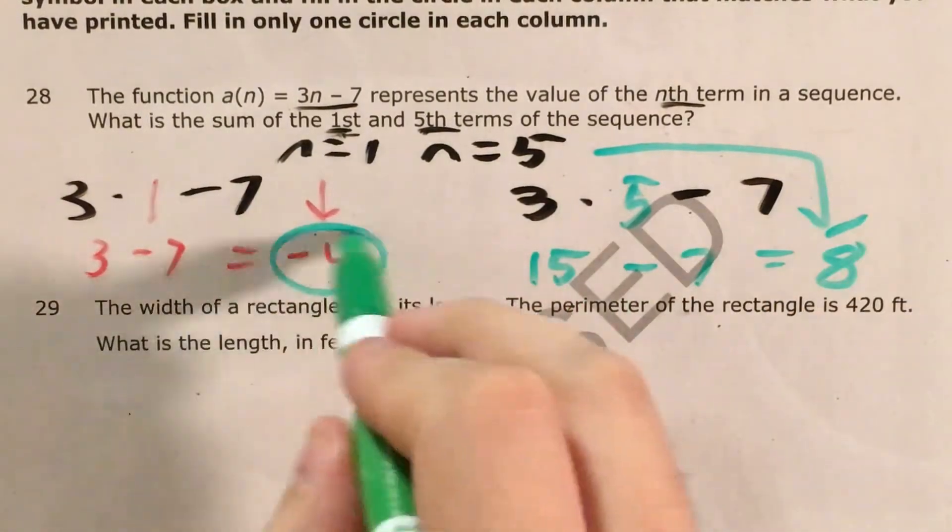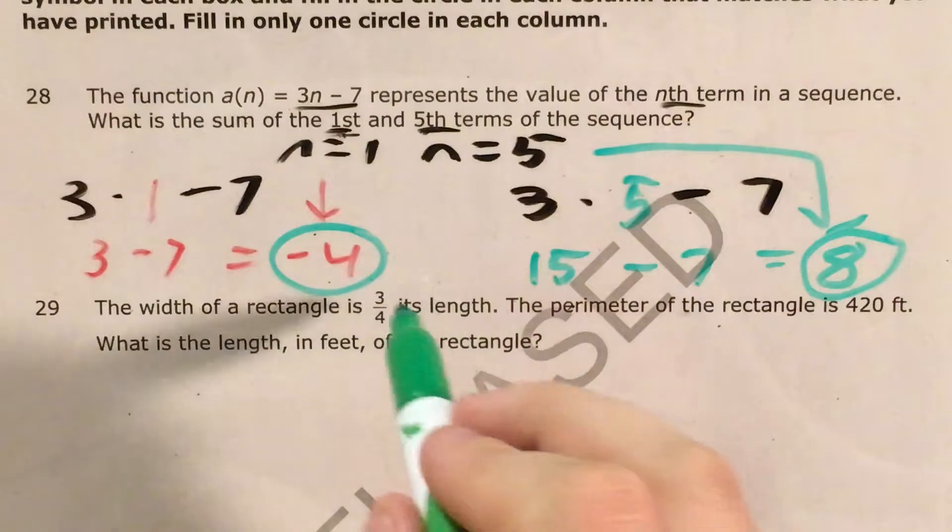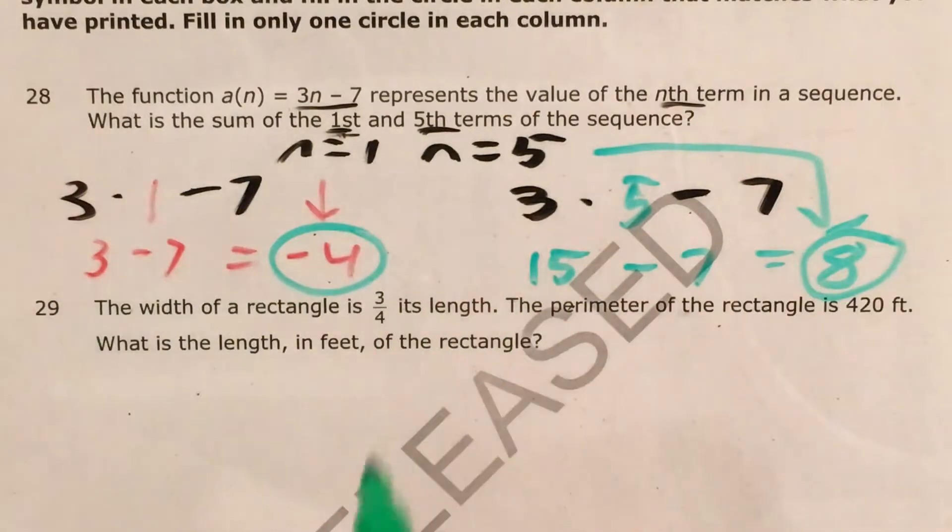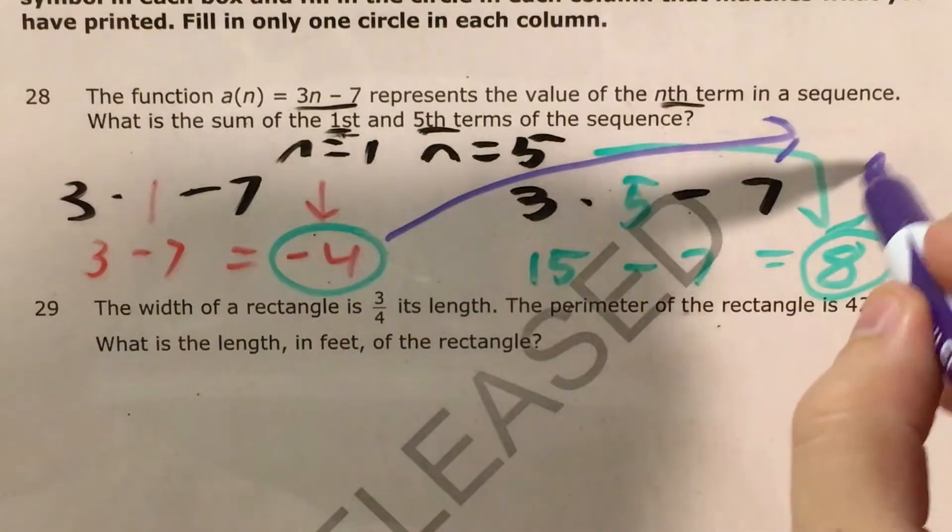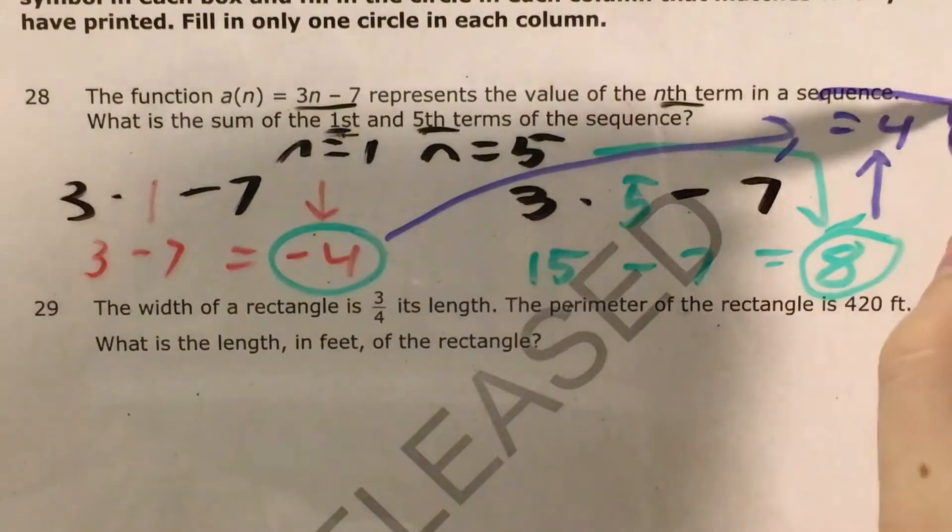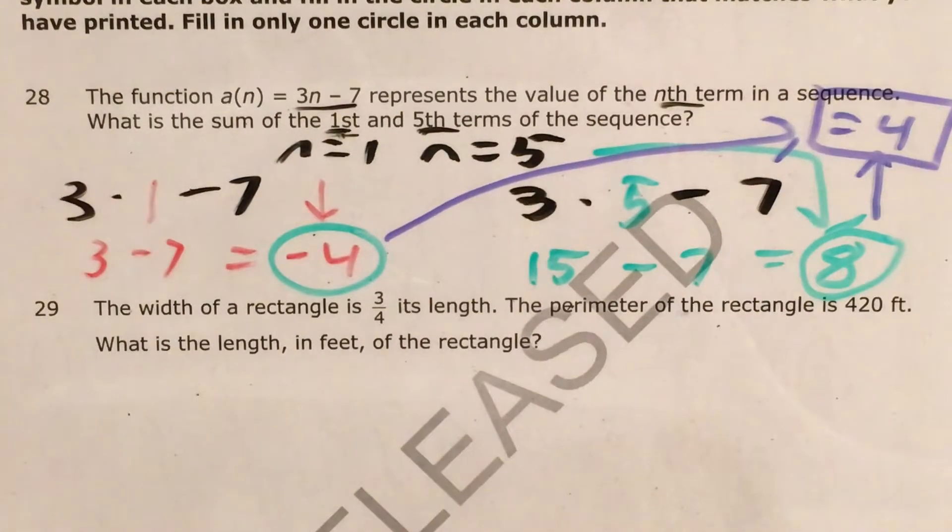So my first term was negative 4, my second term was positive 8. If I add those two together, whether I use the calculator or my rules of integers or whatever I want, I should get a sum of 4. So my answer is 4. And of course,